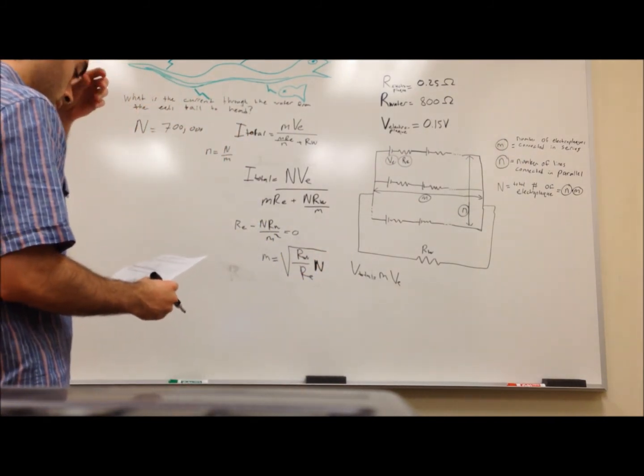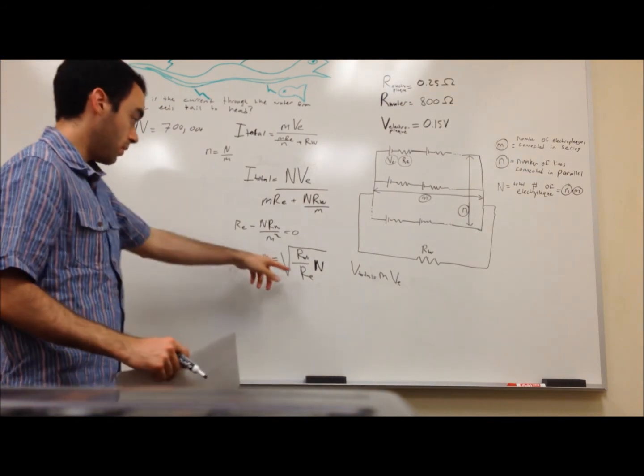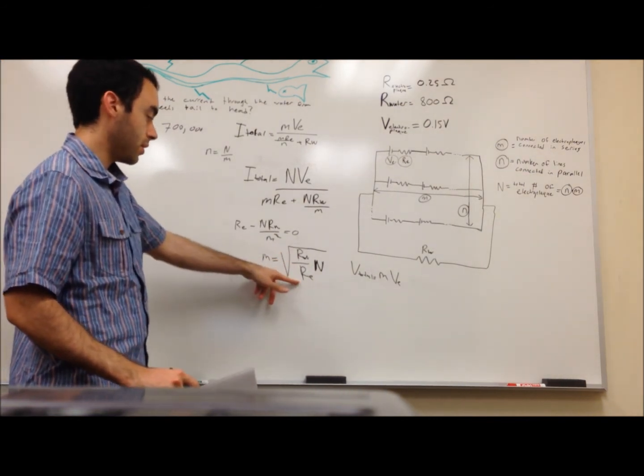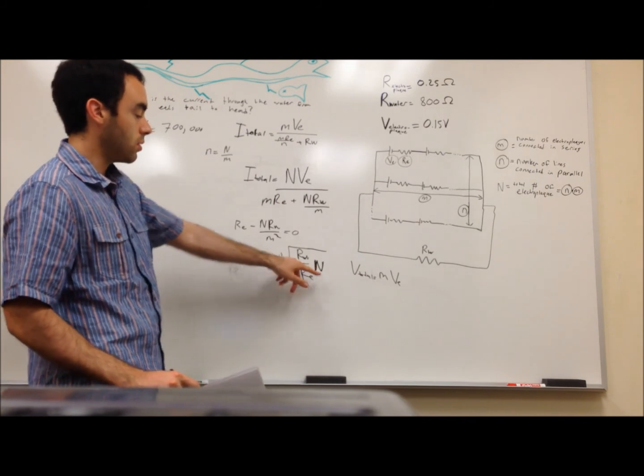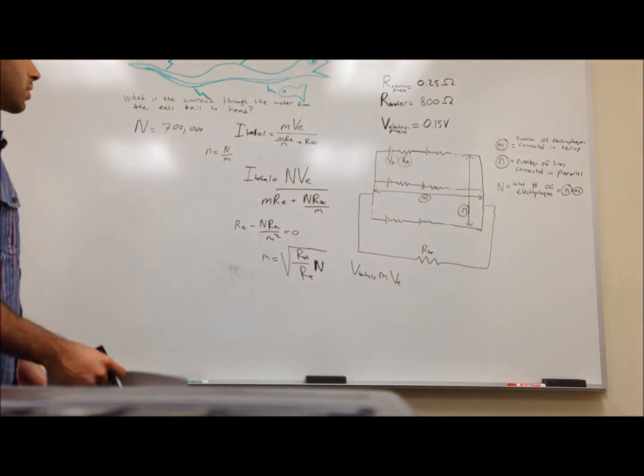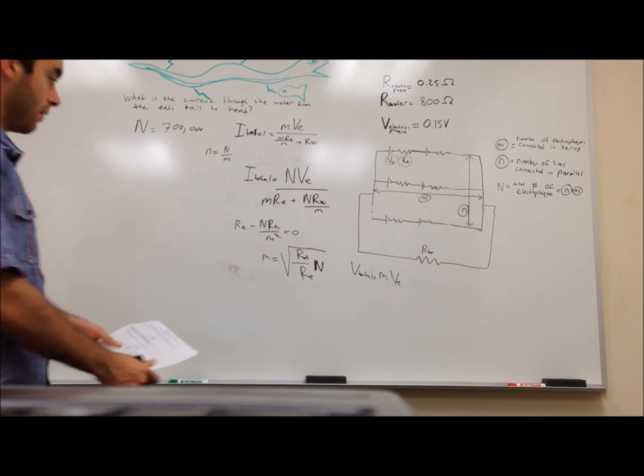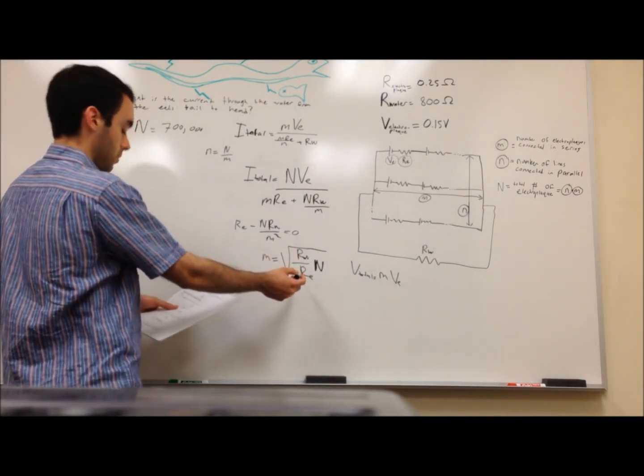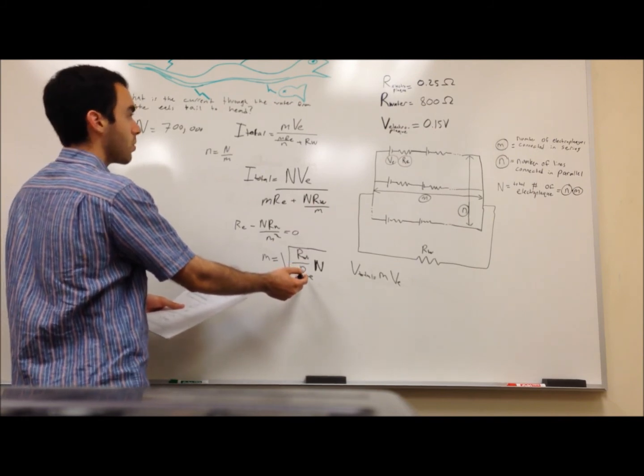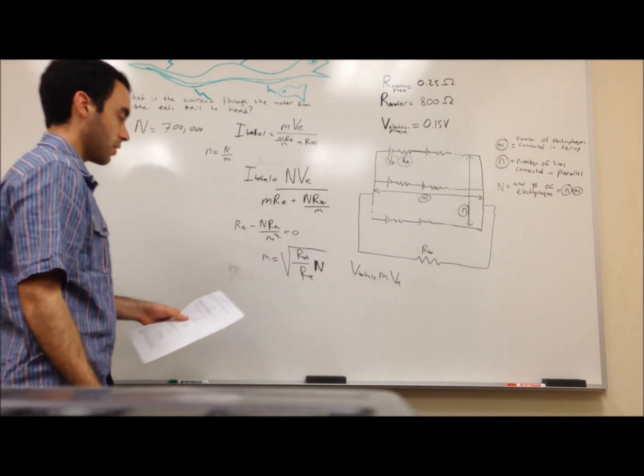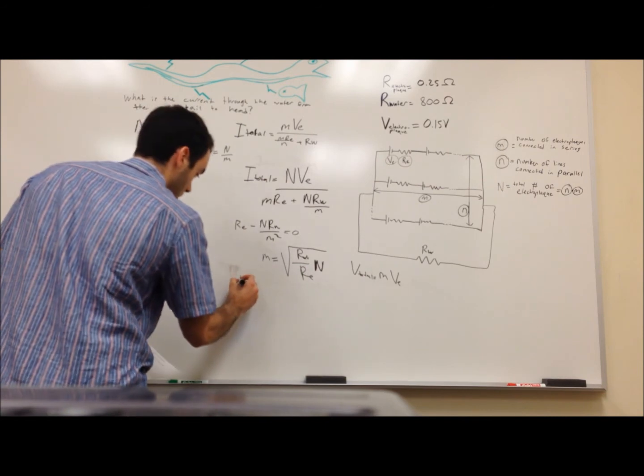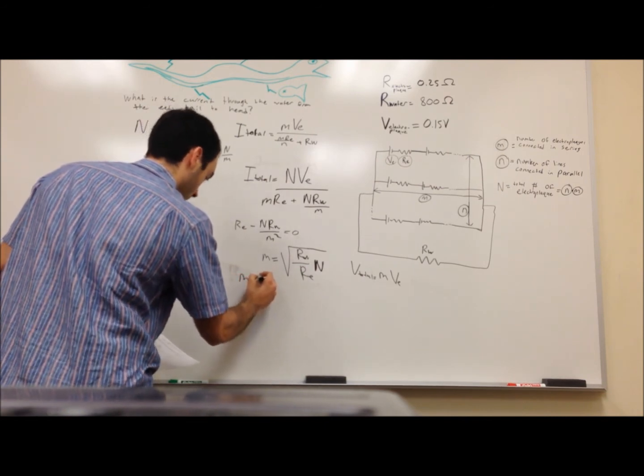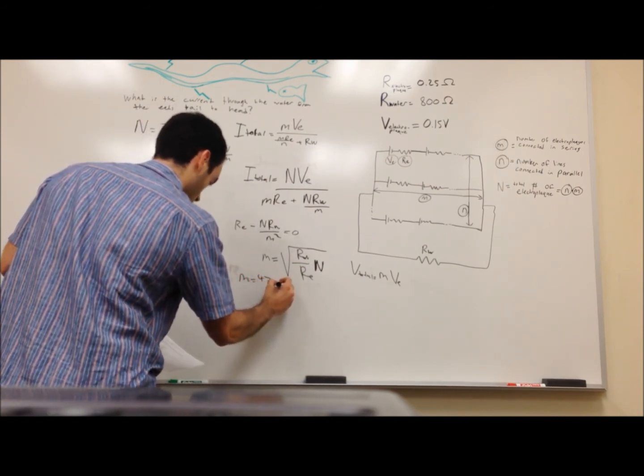So now the only thing left is that we know the resistance of the water. We know the resistance of each electroplaque. And we are given the total number of electroplaques in the eel. And so plugging in the numbers, 800, 0.25, and 700,000, you're going to get m equals 47,000.